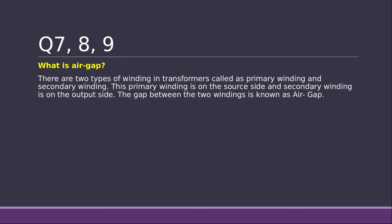What is air gap? There are normally two types of windings in transformers. One is called primary winding and the secondary is called as the secondary winding. We know it all. The primary winding is on the source side and the secondary winding is on the output side. The gap between these two is referred as air gap.